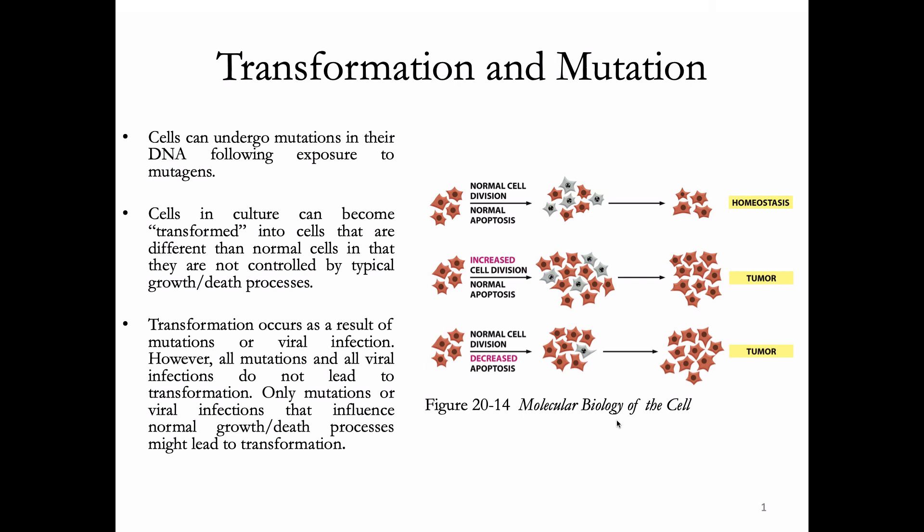There are three terms that students sometimes conflate. Two of them are transformation and mutation. Cells can undergo mutation in DNA following exposure to mutagens, replication errors, or other causes. All mutations are not necessarily bad — some don't lead to a change in an amino acid, and some mutations might even be advantageous.